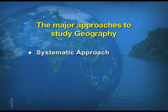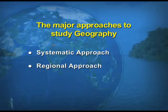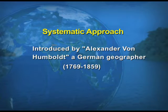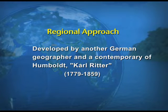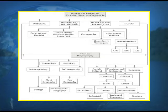There are two main approaches to study geography. One is the systematic approach and the other is the regional approach. The systematic approach was developed by Alexander von Humboldt, a German geographer, and the regional approach was also developed by a German geographer, Karl Ritter. These two approaches are the ways to study different aspects and branches of geography.